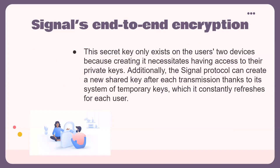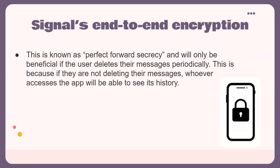The secret key only exists on the two users' devices because creating it requires access to their private keys. The Signal Protocol can also create a new shared key after each transmission thanks to its system of temporary keys, which it constantly refreshes for each user. This is known as perfect forward secrecy, and will only be beneficial if the user deletes their messages periodically — because if they are not deleting their messages, whoever accesses the app will be able to see its history.